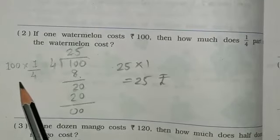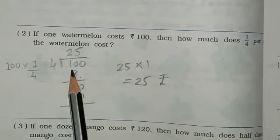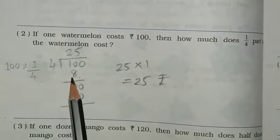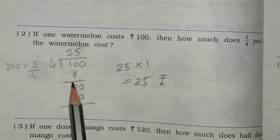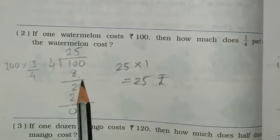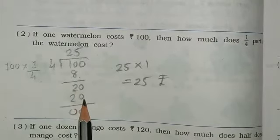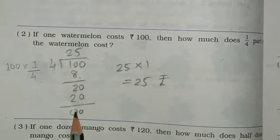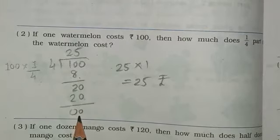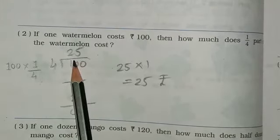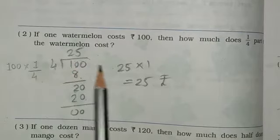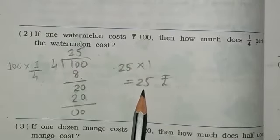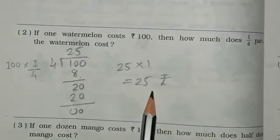First of all, 100 divided by 4. So here write 100 divided by 4. 4 goes into 10 twice giving 8, and 10 minus 8 is 2. Last digit 0 comes down, 4 goes into 20 five times giving 20. 20 minus 20 is 0. So answer is 25. 25 multiplied by 1 is 25. So answer is 25 rupees.